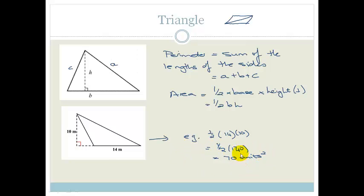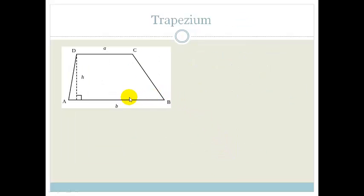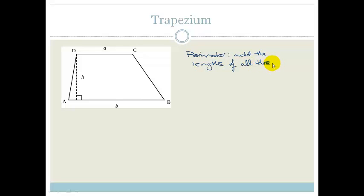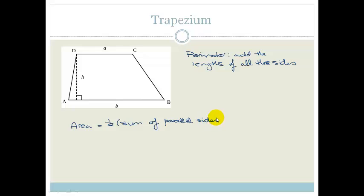Remember that your area is always in units squared. Let's look at the trapezium. The perimeter is easy — you just add the lengths of all the sides. But the area is a special one: it is half the sum of the parallel sides multiplied by the perpendicular height. That is the area of a trapezium.